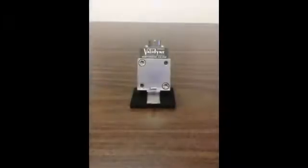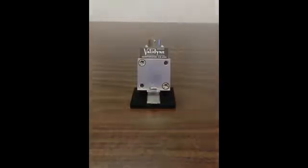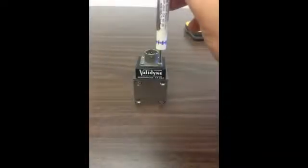Here is a typical DP-15 variable reluctance pressure sensor. The first test we will perform is a continuity check on the internal sensor coils. Loosen the two small screws holding the electrical connector and expose the wires underneath.